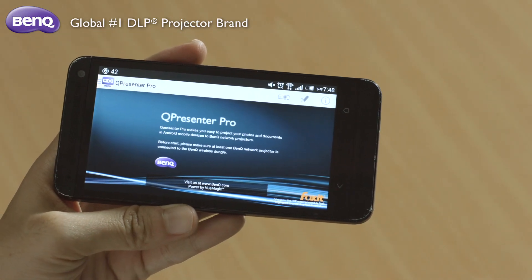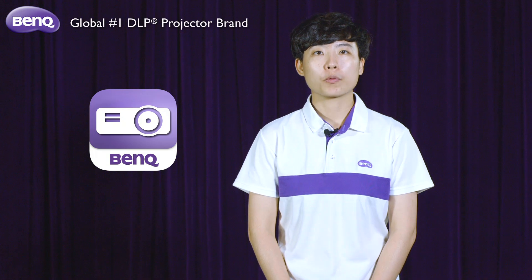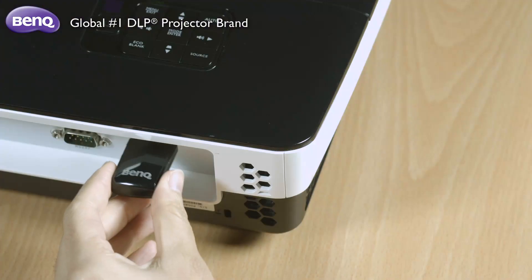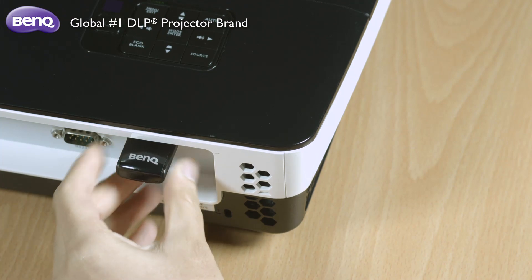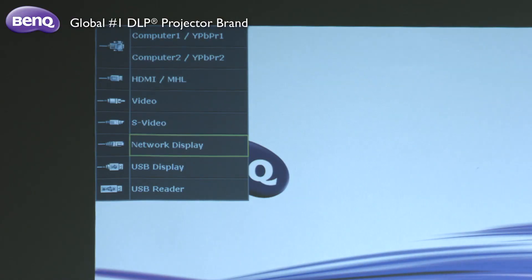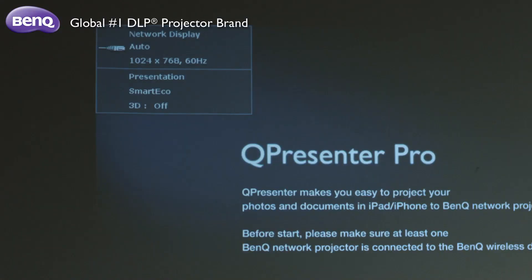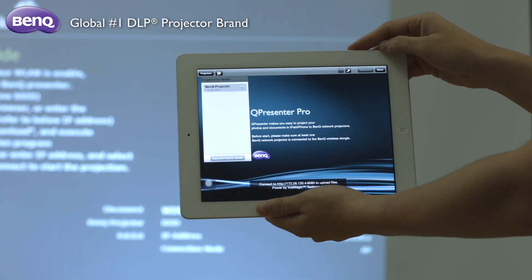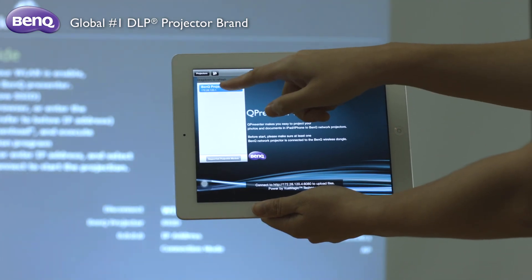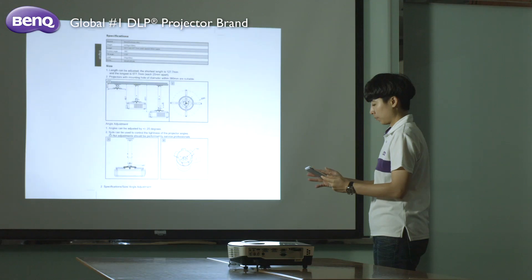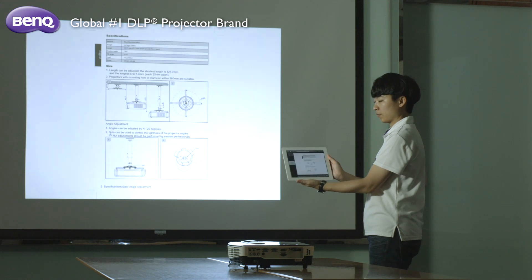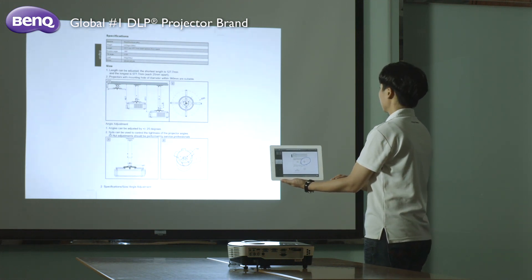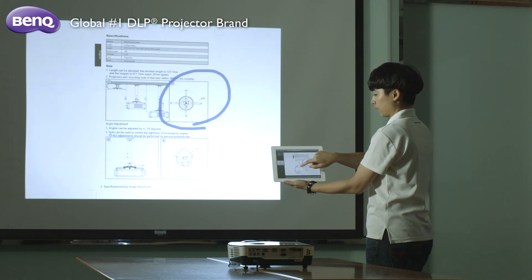Presenting with Q-Presenter Pro is simple. Before your presentation, you will want to first turn on your projector and plug in the dongle. After that, switch the source to network display and click here to open the app and select the file you need to make your presentation. Now, you can choose to present a whole presentation or just a few selected slides. You can also use the sketch function to highlight the key points you wish to make during your presentation.